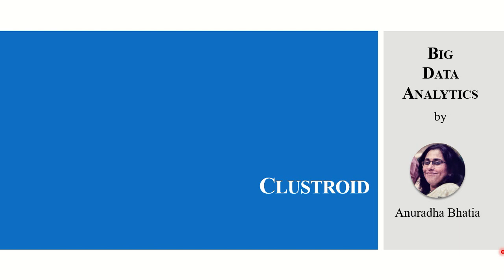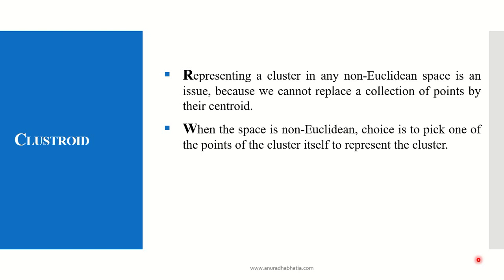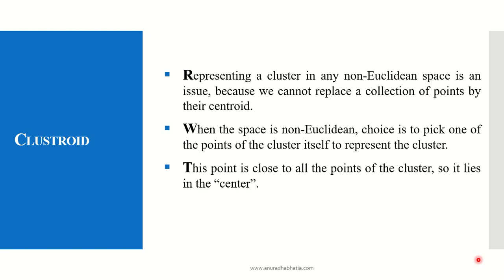Clustroid in big data analytics. What is a clustroid? Representing a cluster in any non-Euclidean space is always an issue because we cannot replace a collection of points by their centroid. When the space is non-Euclidean, the choice is to pick one of the points of the cluster itself to represent the cluster. In non-Euclidean spaces, where I do not have numbers to calculate my center — such as a document, text, or word — the point closest to all other points in the cluster is called the clustroid.